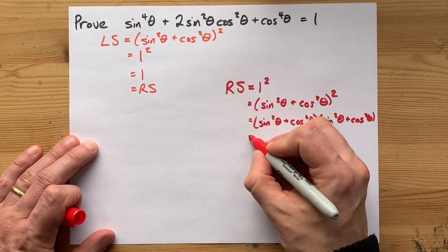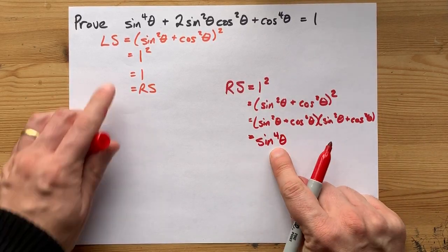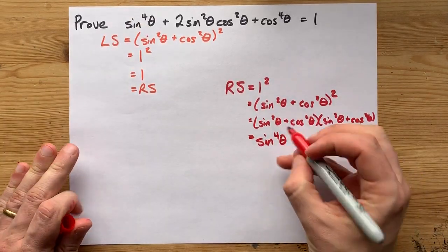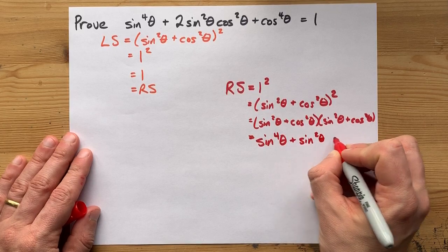First times first, sin²θ times sin²θ gives me sin^4θ. Ah, see? Sin²θ times cos²θ is sin²θcos²θ. Not much more you can do with that.